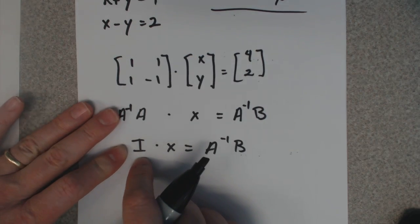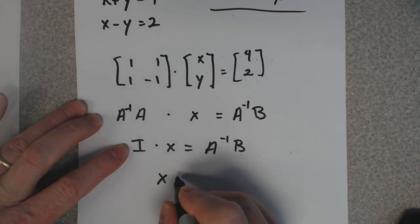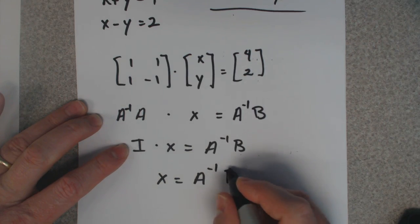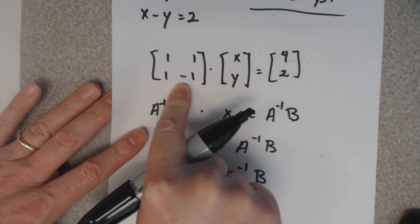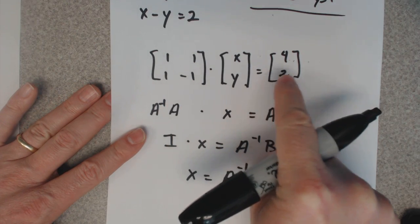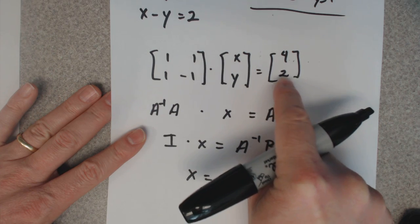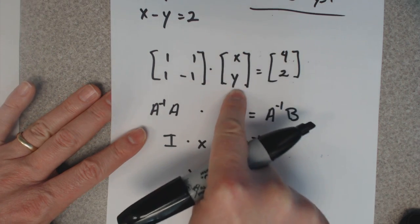It essentially cancels. So they call this the inverse method because you take the inverse, find the inverse of this matrix, and multiply it by this matrix, and it will tell you what this matrix is right here.